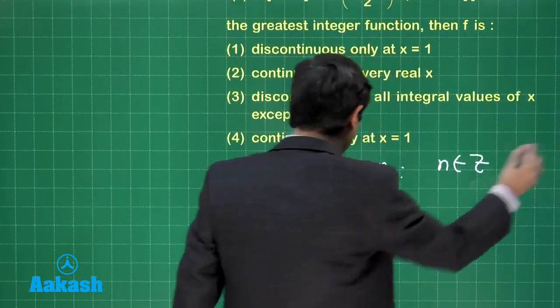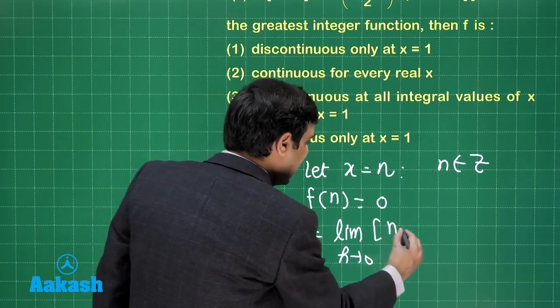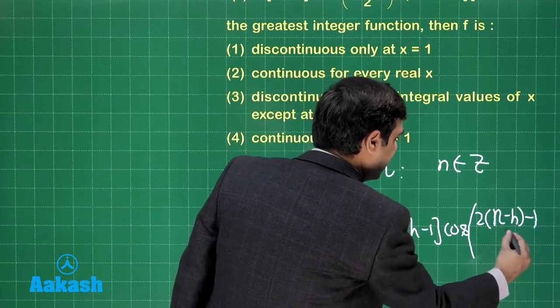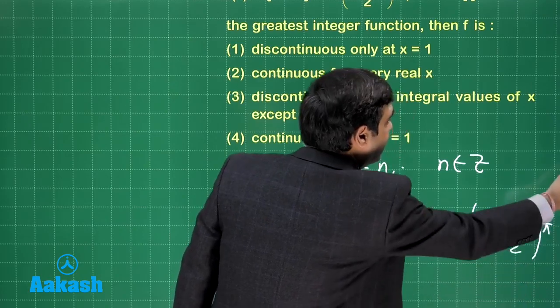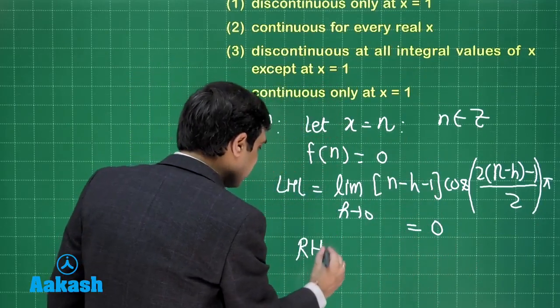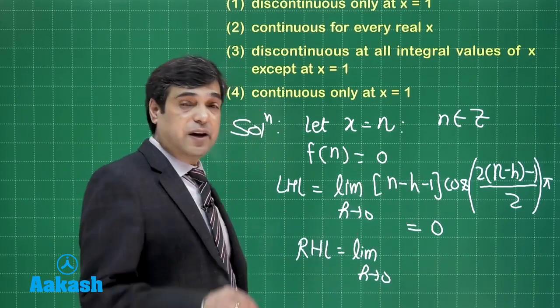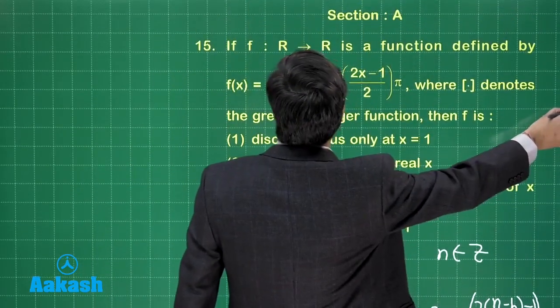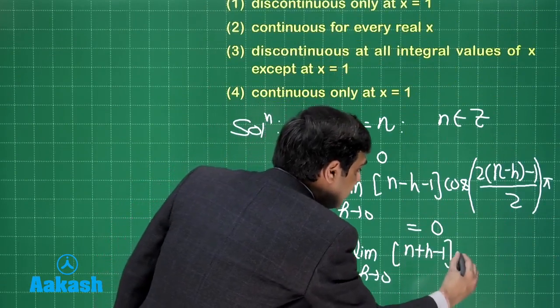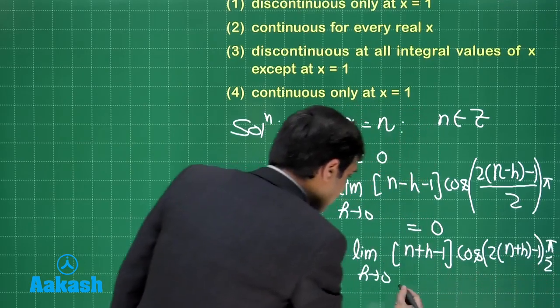So f(n) is simply equal to 0 because this will make it 0. Now when you look at the left-hand limit, LHL, limit h approaching 0, greatest integer [(n minus h minus 1) cos(2 times (n minus h) minus 1) upon 2 into pi], right. Now when you check this term, this is n minus 1, when you apply limit it will become 0. In the similar fashion, when you go for RHL, it will be limit h approaching 0, greatest integer of (n plus h minus 1), that will simply give you n minus 1, and here you can see the result because of this second term will be simply 0. So let us write down (n plus h minus 1) into cos[2(n plus h) minus 1 into pi by 2], making it 0 again.